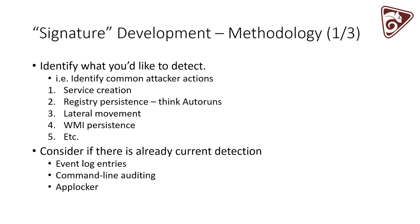As you start thinking about what events you might want to create, think about things like service creation, registry persistence — the Win32_StartupCommand class is a great one — lateral movement, and WMI persistence. Go down your list, start writing out what you'd like to detect, and then dig through the WMI repository to find classes that match the action you want to detect.